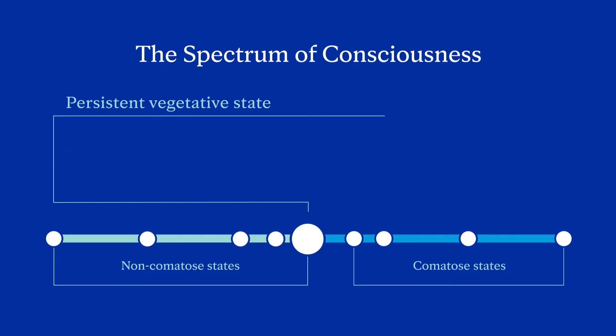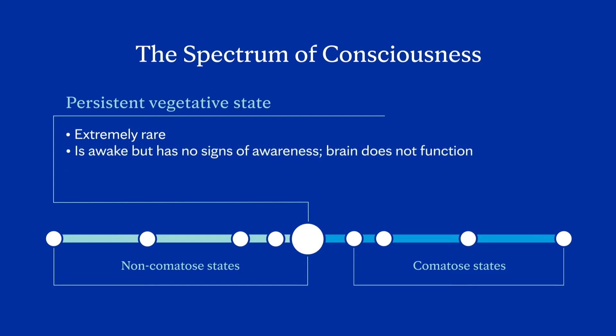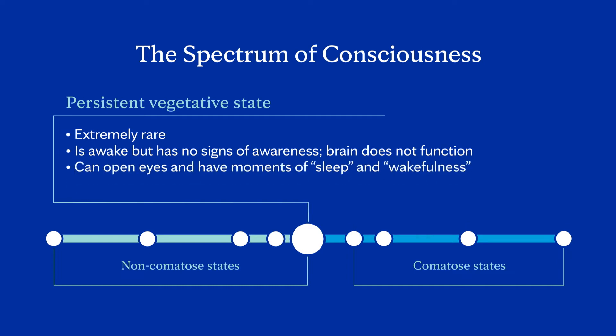Persistent vegetative state: this is an extremely rare state where a person is awake but has no signs of awareness. Their brain doesn't function, but they appear conscious. They can open their eyes and have moments of sleep and wakefulness. They can breathe on their own and may live for years or decades in this state with proper care.